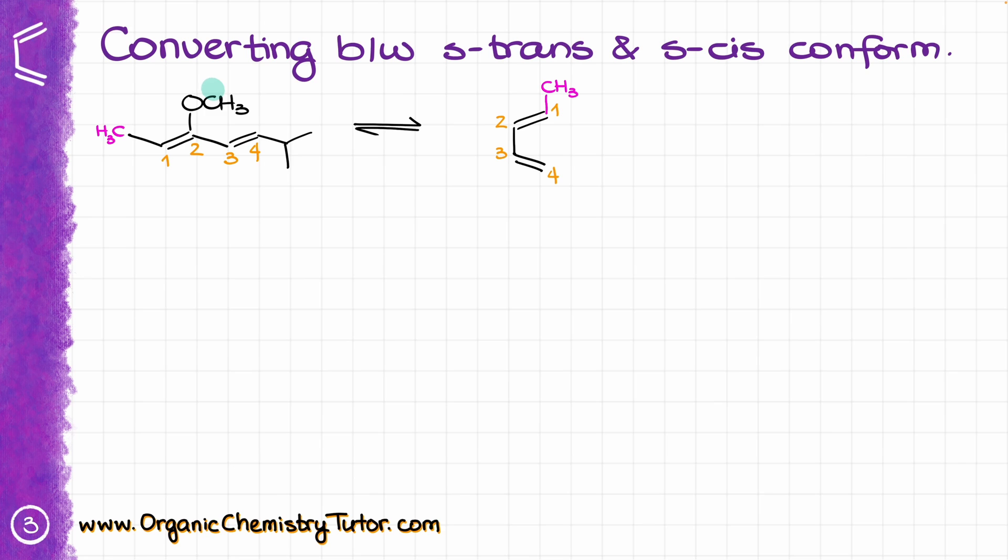Next, I have this methoxy group that is sitting on my carbon number 2. So carbon number 2 is right over here, and the methoxy group is going to be on the same side with the CH3, with the pink CH3 group, which means that my methoxy group must be right over here on the same side with my CH3. So I'm going to show it like that.